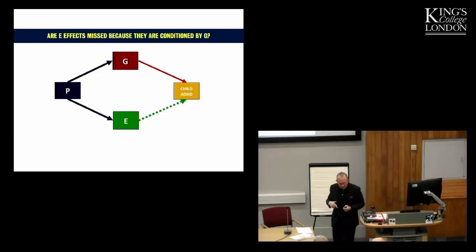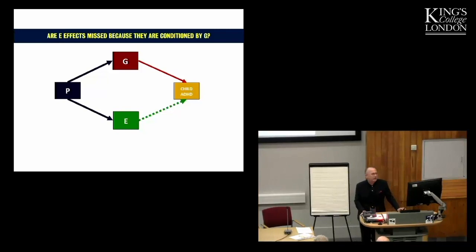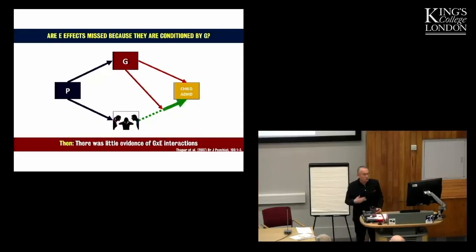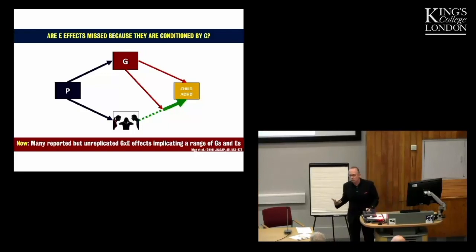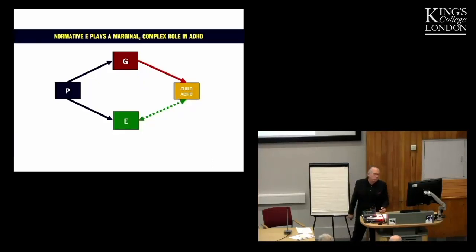The third aspect of interplay that we know a lot more about now is gene-environment interaction. So, is it the fact that environmental risks are being missed because they're conditioned by genetic factors? So, the idea that you're only getting the effect of an adverse environment if the child is carrying particular genes. So, then, 10 years ago, there was one or two gene-environment interaction studies, mostly around maternal smoking. Now, there's been loads of reports of gene-environment interactions, but usually in relatively small and low-powered studies, and very few of them in replicated. So, I think we still need to be a little bit sceptical about the potential gene-environment interactions. So, overall, normative environments seem to play a rather marginal and rather subtle role, complex role in ADHD etiology.